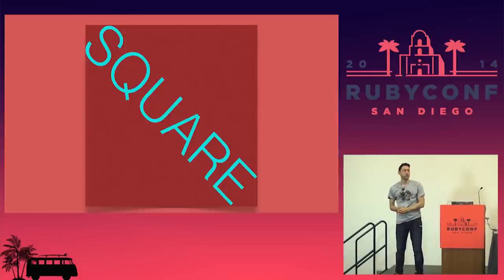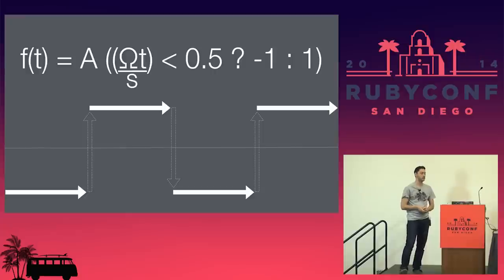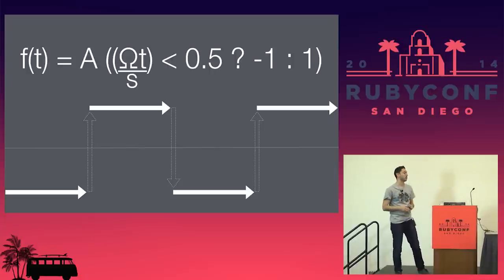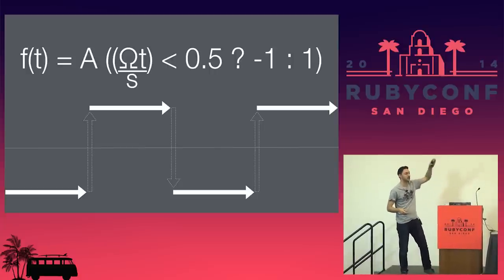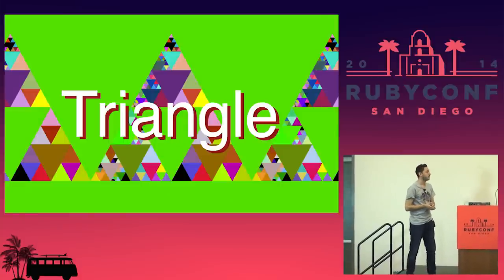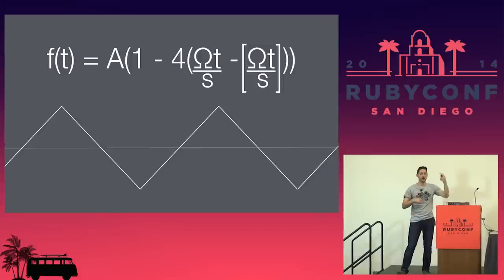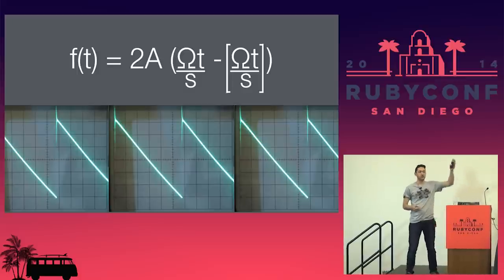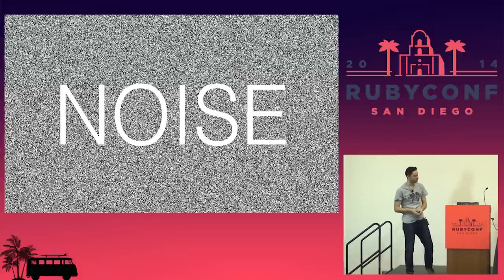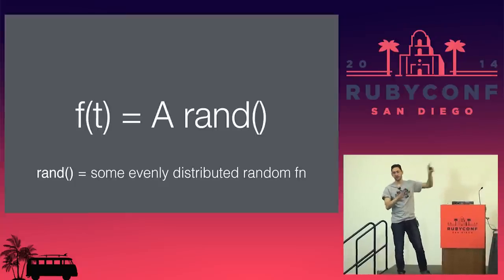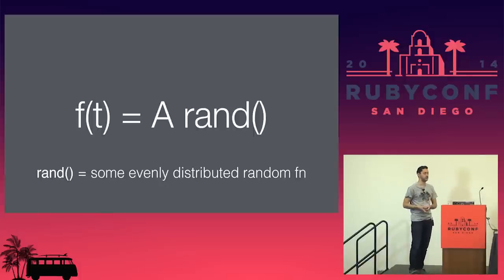The next fundamental waveform is the square wave, which looks pretty much like what it sounds like. You're oscillating from the negative maxima to the positive maxima and back again — 440 times per second or whatever your frequency is. Then we have the triangle wave, which goes up and down and oscillates. Then the sawtooth wave, which instead of going up just goes down. Finally, the noise wave is really just randomness — probably the easiest one to create.